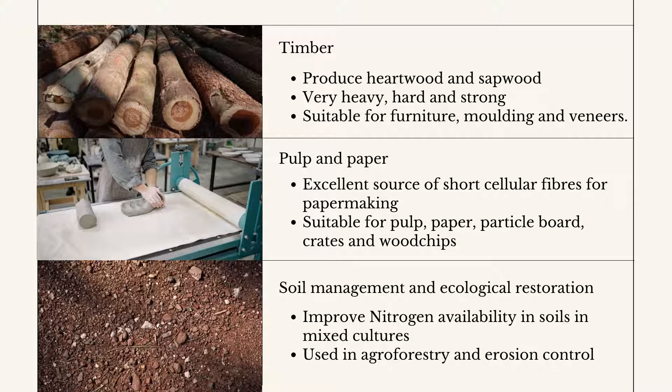Acacia mangium is also used in soil management and ecological restoration. It can improve nitrogen availability in soils in mixed cultures, as the trees increase the turnover rate of nitrogen in the topsoil. It increases soil biological activity and rehabilitates the physical and chemical properties of the soil. It is used in agroforestry and erosion control and helps to recover degraded tropical land.